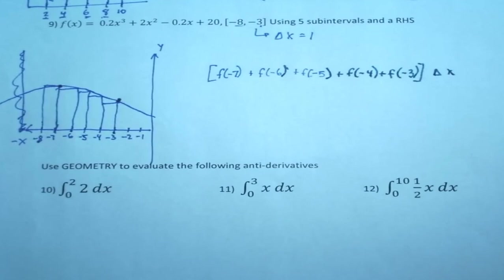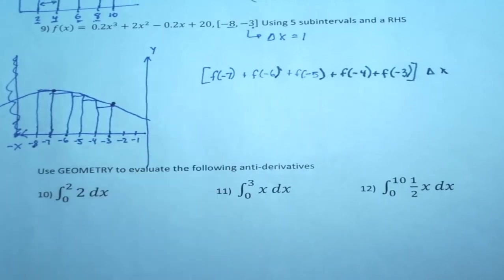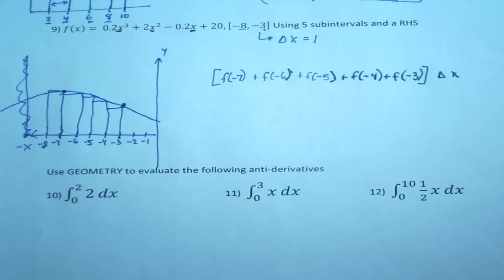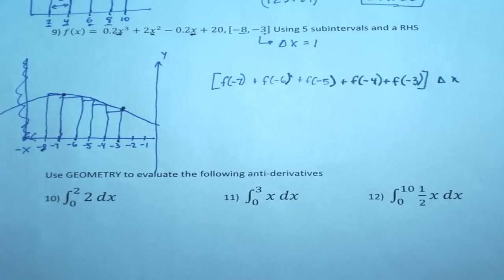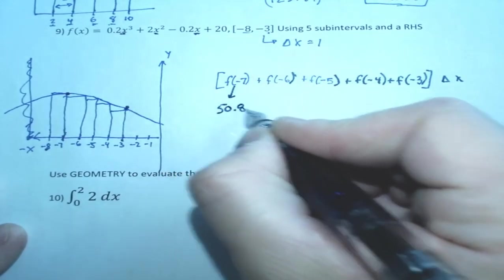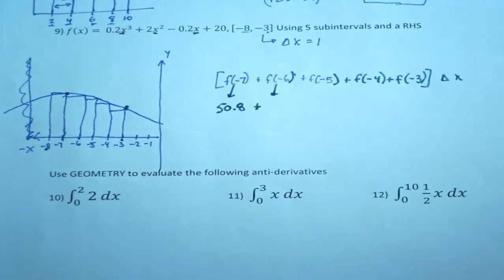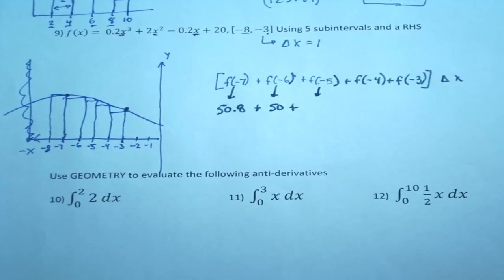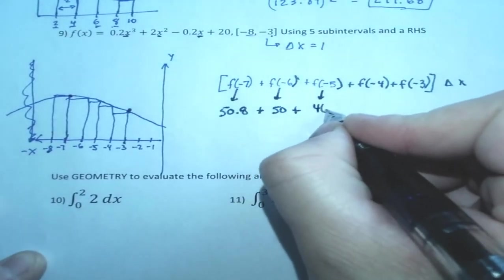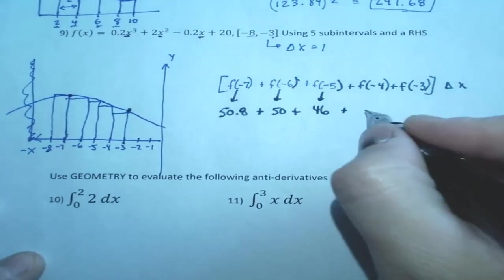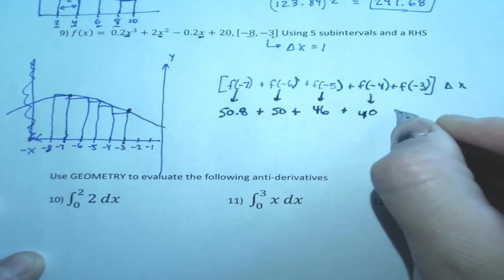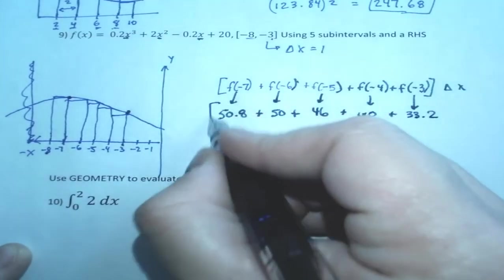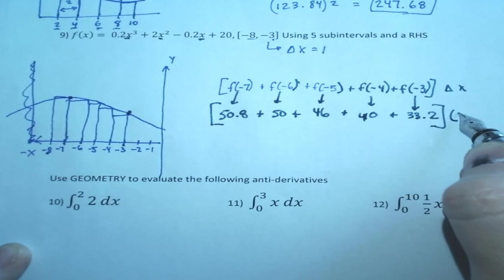So now I need to find the value f of negative 7. How do I do that? Well, I plug a negative 7 in here, here, and here. And I've already done that, and so I'm going to just read these off to you. So this y value is 50.8. This y value is 50. This y value is 46. This y value is 40. And this y value is 33.2. And of course we know delta x is 1.